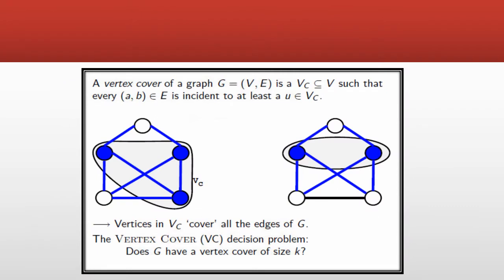In this diagram, on the left side, the colored — blue — vertices are the nodes from which all the edges are covered. On the right side, if you are not taking the bottom-most right node, the bottom edge is not covered. So we have to take all the vertices which cover all the edges, which gives us the minimum size vertex cover.